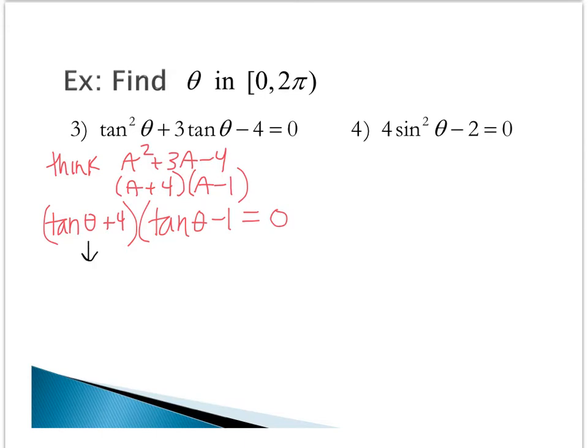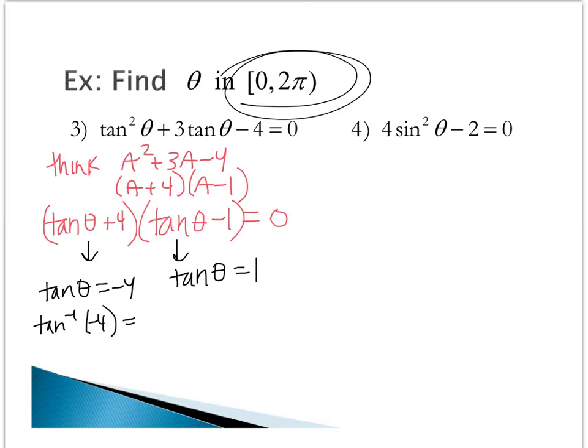These are my two mini problems that I want to solve. Finding when tangent of theta equals negative 4, it's not something that we know from the unit circle. We're going to use the calculator. We'll plug in the tan inverse of negative 4, and the calculator is going to give me the answer of negative 1.326 in radians because now we're in interval 0 to 2 pi.